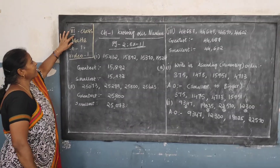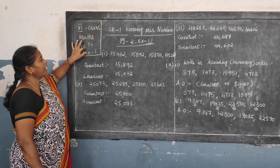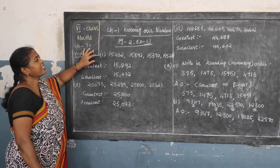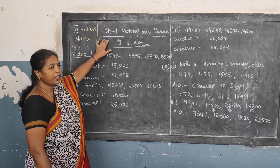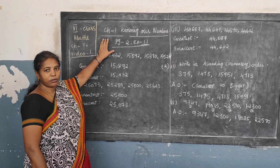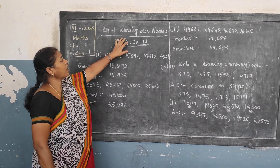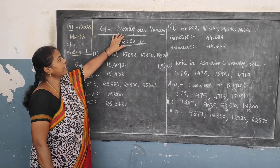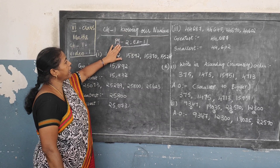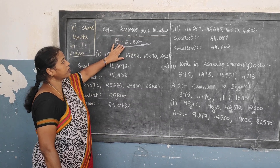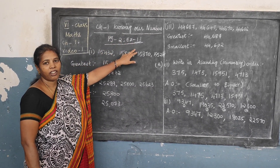See children, 6th class children, math subject — it is chapter 1. Now look, chapter 1, even if you don't have the textbook, from the blackboard you can do it, children. Now, 'Knowing Our Numbers' — this is our chapter 1, and page number 2 you should see, children, and exercise 1.1.